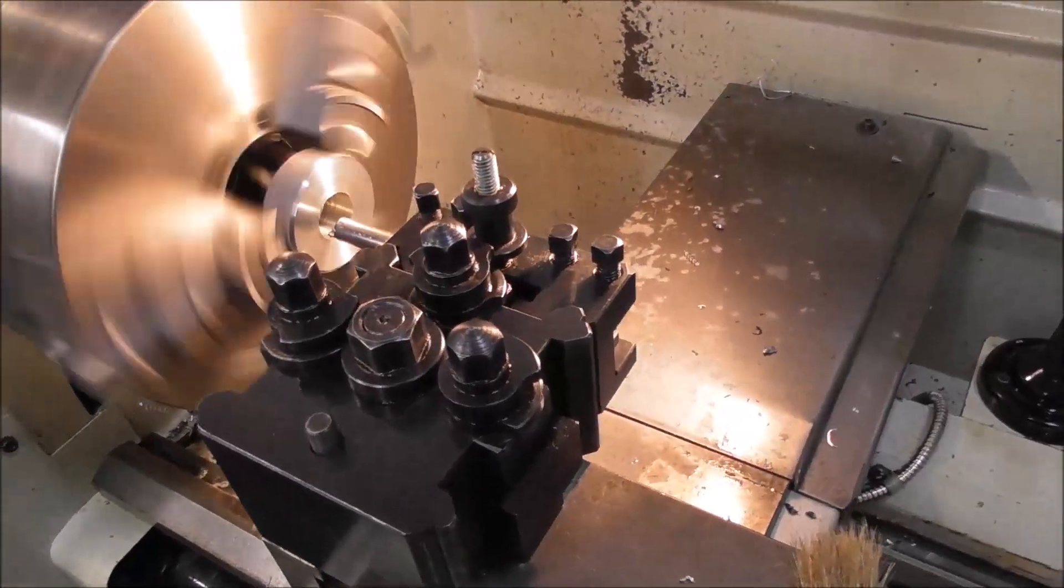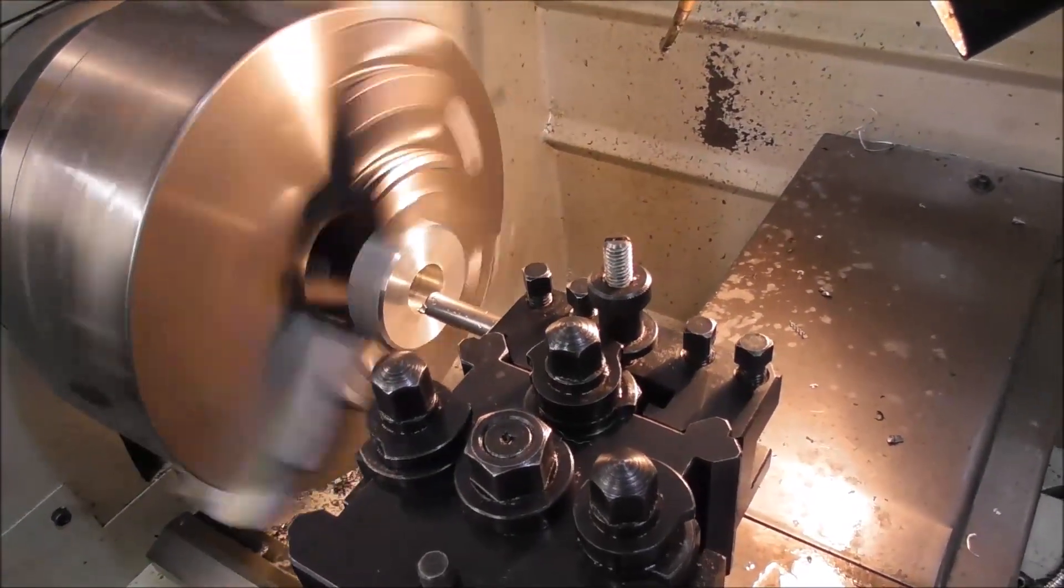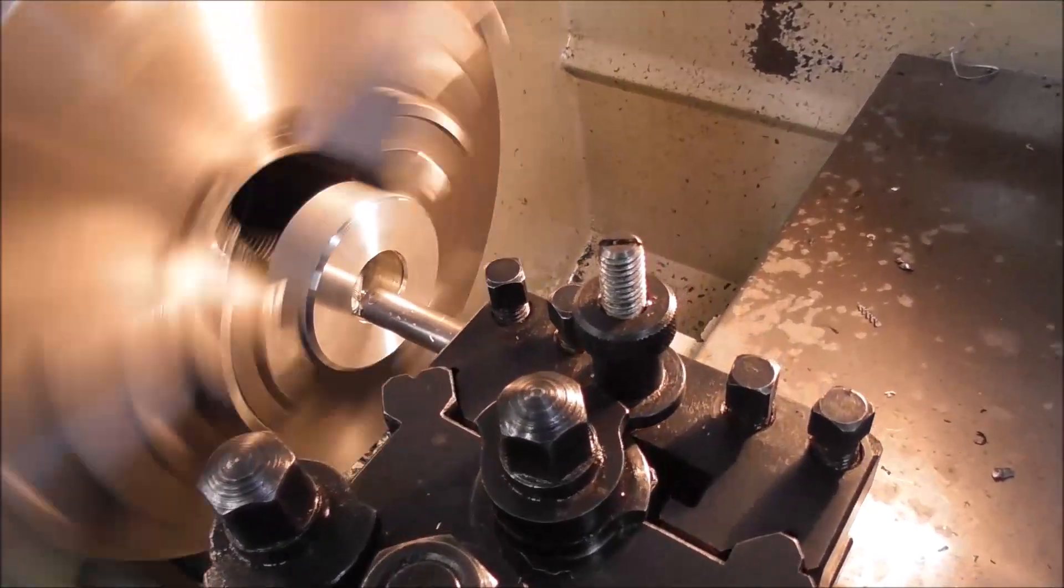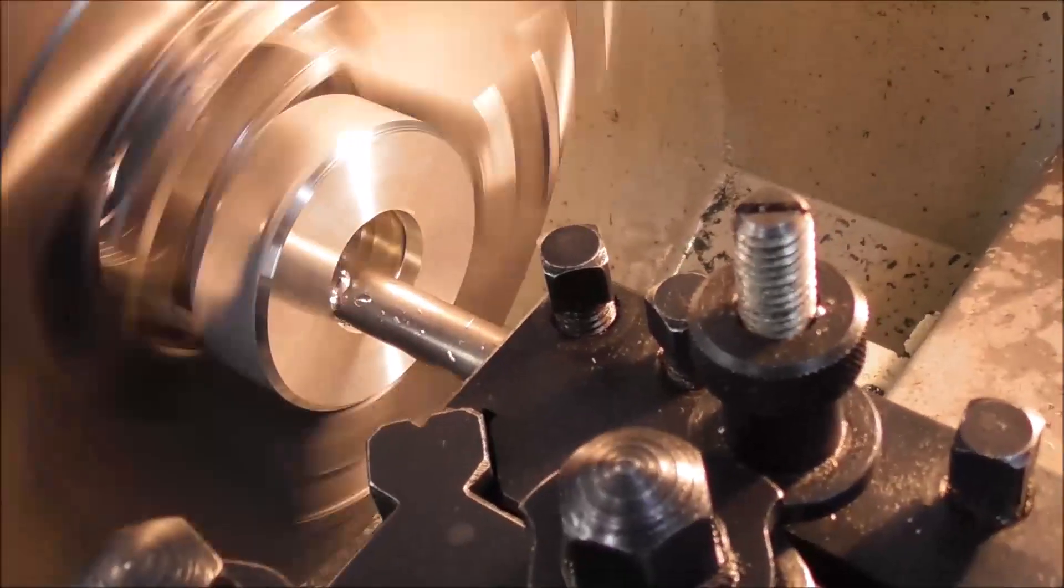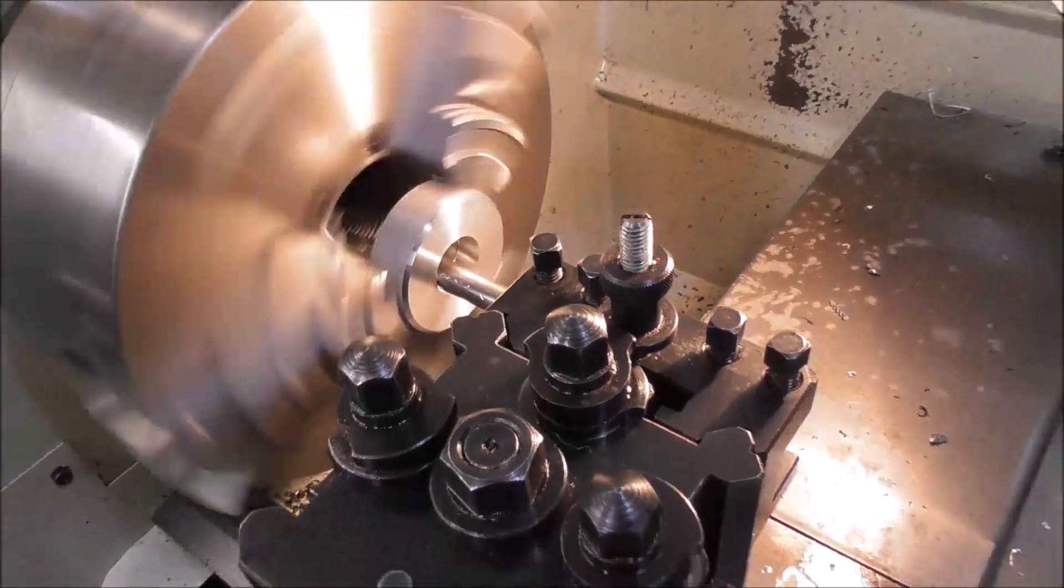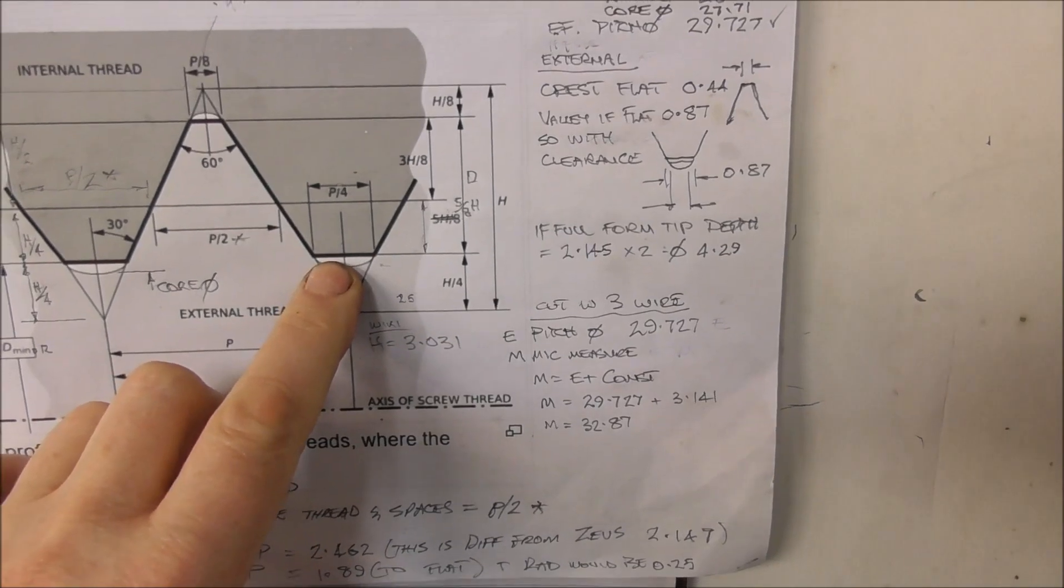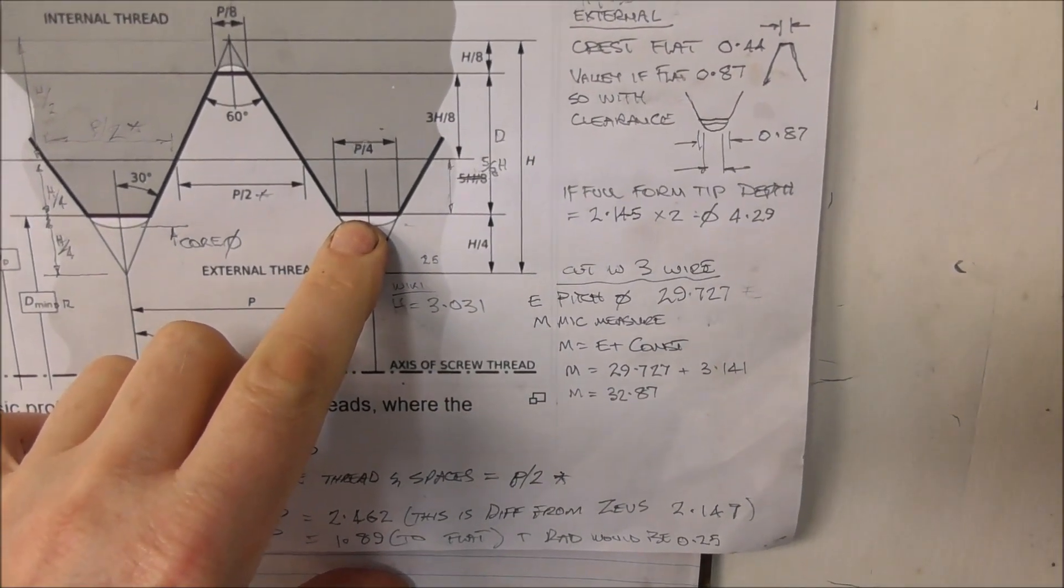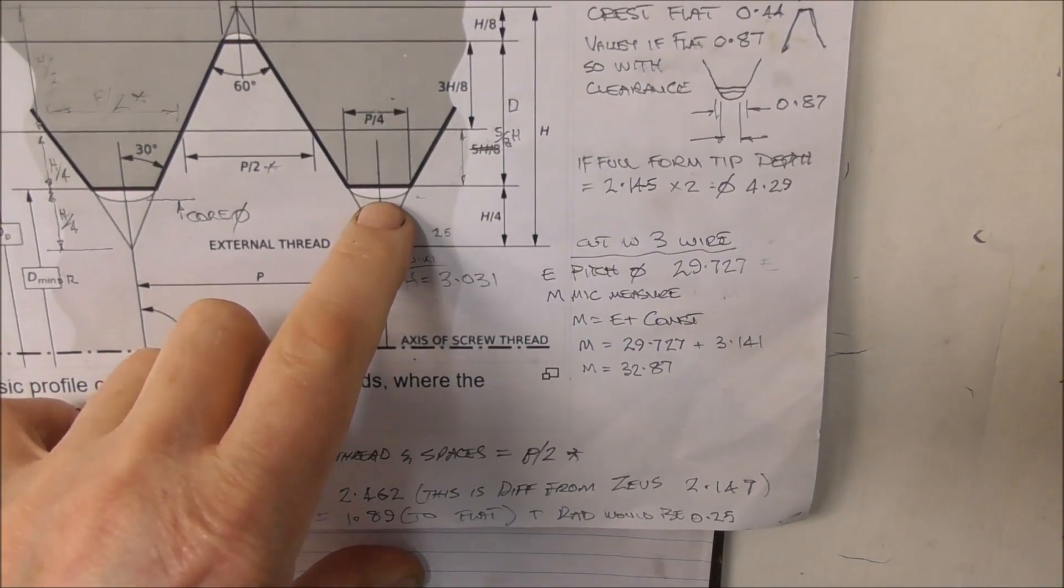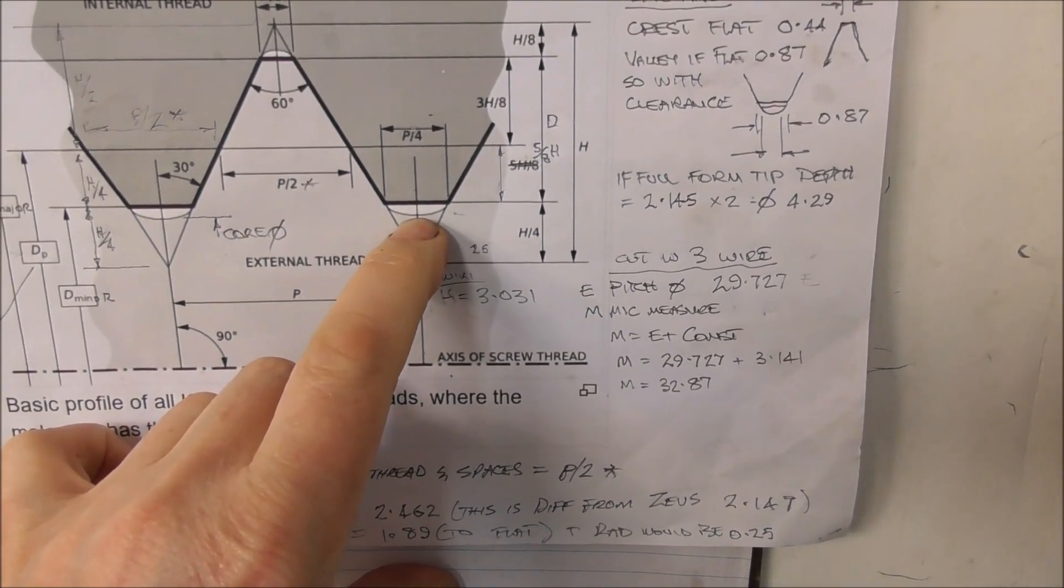So with the internal thread or the nut, obviously bore it out first to the minor diameter. This is the minor diameter here. This flat in my case is 28.21 and it's a little bit bigger, its clearance, than the actual core diameter of the external thread which is down there in the radius.